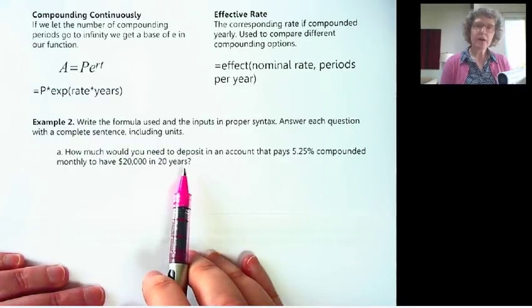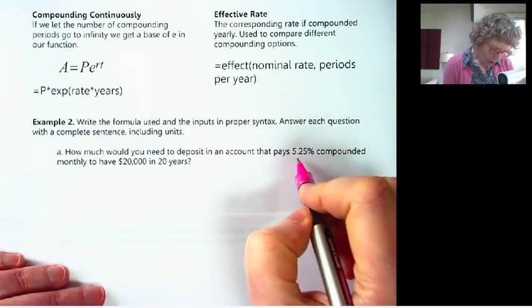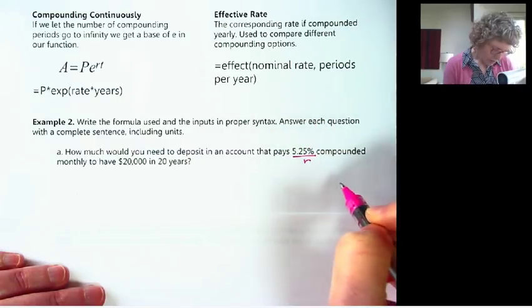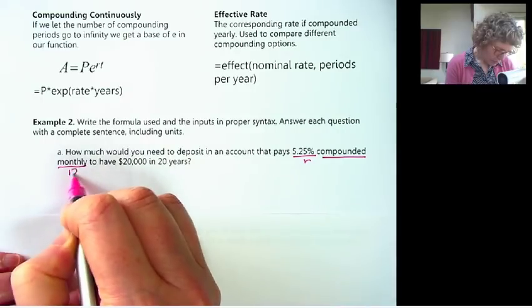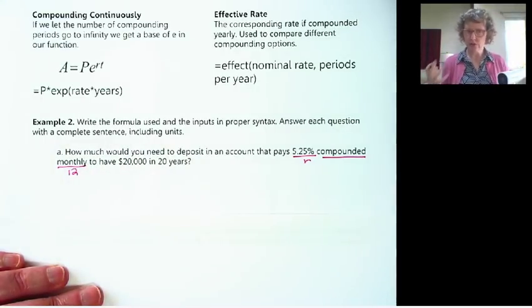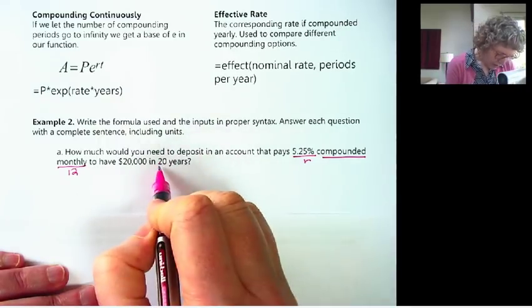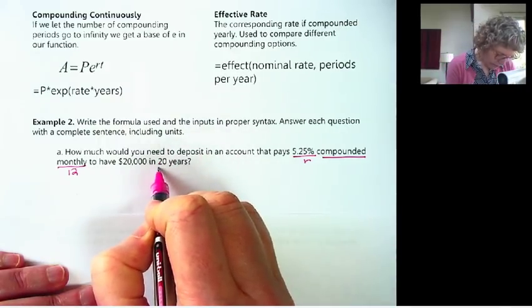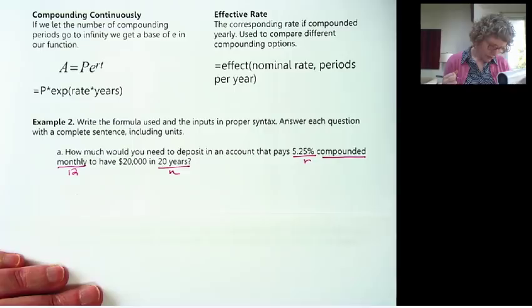Okay, so we know we've got all those pieces of information. We've got our R compounded monthly. So we know we're talking about compounded interest and we're going to need to use a 12. We've got 20 years, so that's our T. That's our time, 20 years.